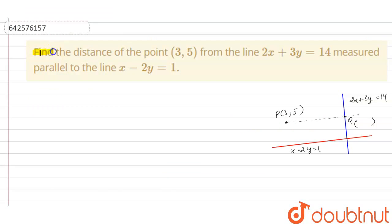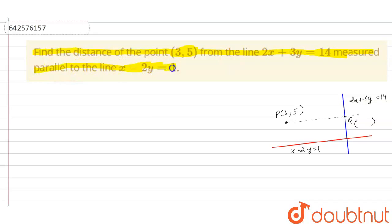The question is: find the distance of the point (3, 5) from the line 2x + 3y = 14, measured parallel to the line x - 2y = 1.